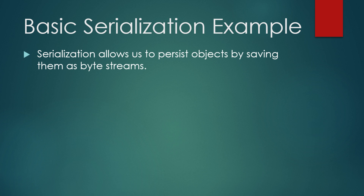Here, we'll serialize a person object to a file and then deserialize it back to an object. In this example, we create a person object and serialize it to a file named person.ser using ObjectOutputStream. This saves the object in a binary format, allowing us to restore it later through deserialization.